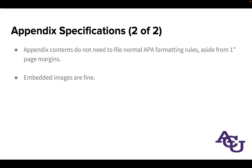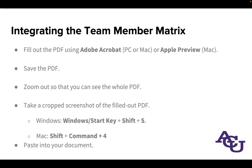The interesting thing about appendices is that because they include supplementary material, content does not need to follow APA formatting rules — aside from fitting within the one-inch page margins, starting on a new page, and having that heading text. So you can embed images, and in fact that is the easiest, most straightforward way to handle the requirement here. I've included some instructions, but let's actually look at this process and grab a copy of that form.